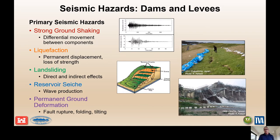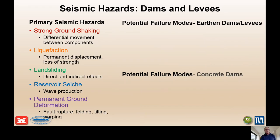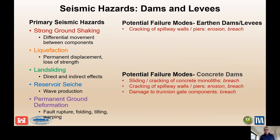And then lastly, the oddball in most dams in the U.S. is permanent ground deformation related to either fault rupture or faulting or tilting. We'll focus primarily on ground shaking. This next slide shows the potential failure modes related to each of those for either earthen dams or concrete dams as related to strong ground shaking, shown here in red. These are just some common PFMs — not always exhaustive — and strong ground shaking can produce potential failure modes for both earthen dams, levees, as well as concrete dams.